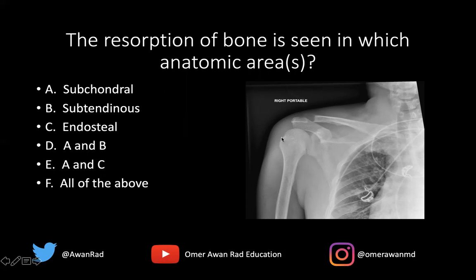If we take a look along the greater tuberosity, there's also a little bit of resorption there. This is where tendons attach — the rotator cuff tendons: supraspinatus, infraspinatus, teres minor. So we have an example of subtendinous resorption here. We don't have any endosteal resorption. So the best answer here would be A and B — subchondral and subtendinous resorption. We can see that where the arrows are, there's osseous resorption of bone.